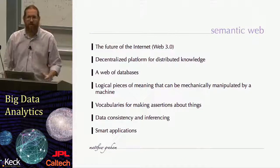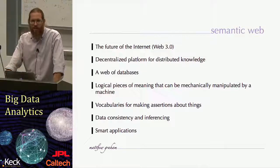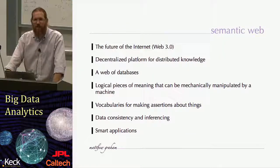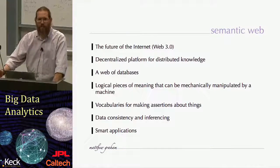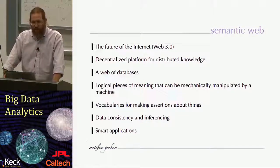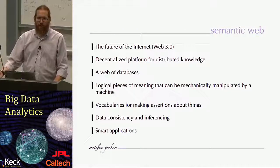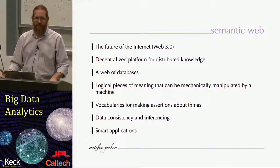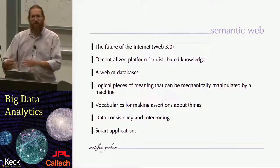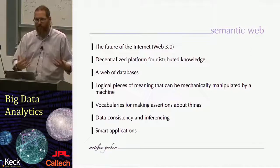The idea behind semantics and the semantic web is that it's a set of technologies and methodologies for representing knowledge in a machine-processable manner. It's envisaged, and has been for at least the last decade or so, very much as the future of the Internet. If you regard the first generation of the Internet as a set of connected web pages or some sort of glorified online library, the next generation would be a connection of data collections — much richer than just printed material — which would allow you to do arbitrary queries and analyses in a connected fashion. The idea is a web of data, a web of databases, a decentralized platform for distributed knowledge.